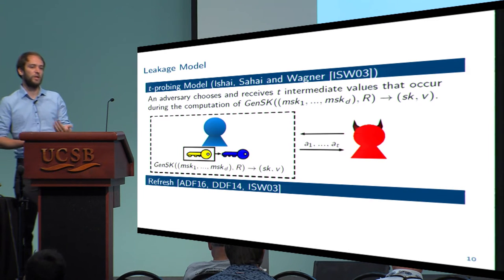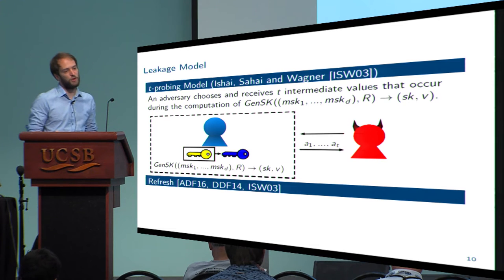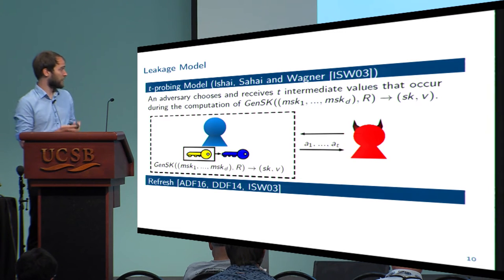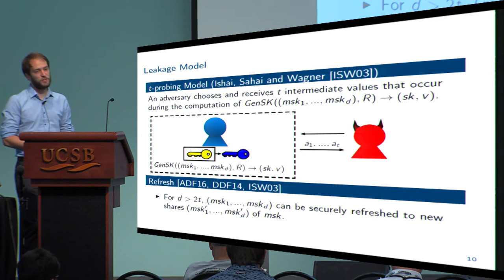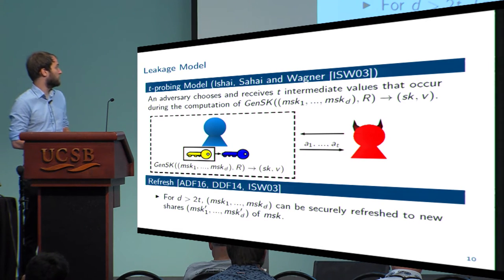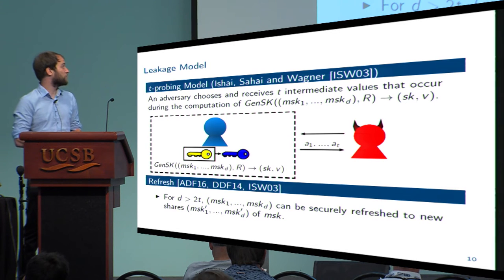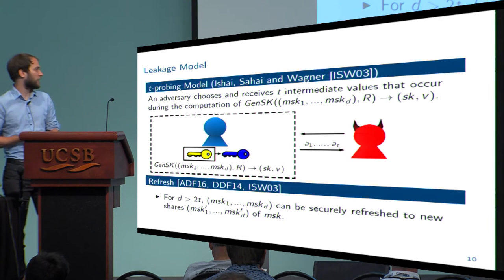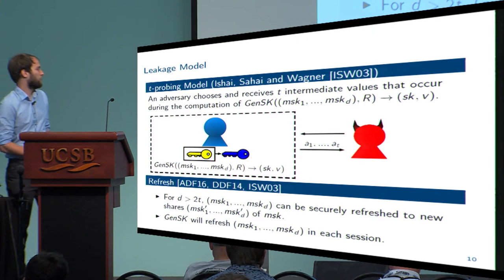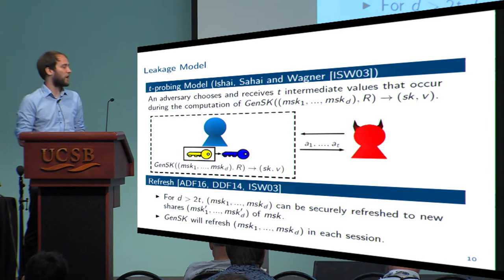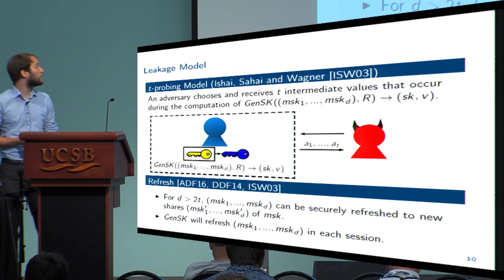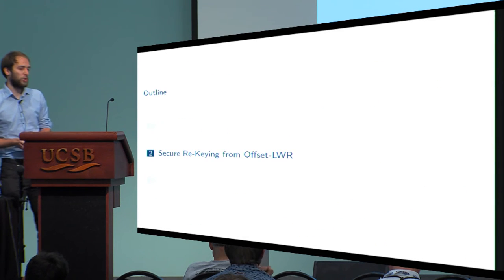There are several proposals for such a refreshing algorithm. Basically, if we use shares numbering more than two times the amount of values that an adversary can retrieve, then we can get a secure refreshing. So we just need that this GenSK algorithm refreshes with these shares during each session.